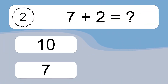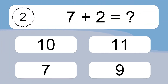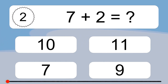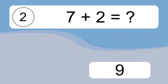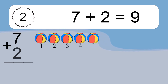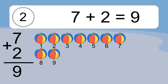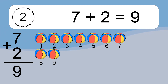7 plus 2 equals what? 7 plus 2 equals 9. Let's count it: 1, 2, 3, 4, 5, 6, 7, 8, 9.